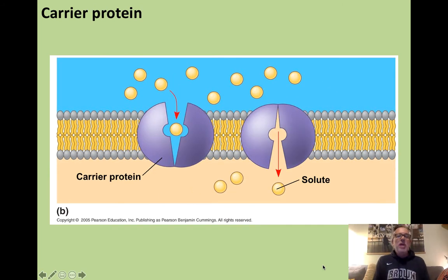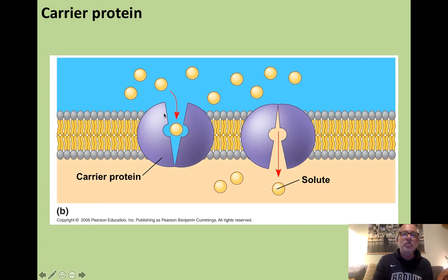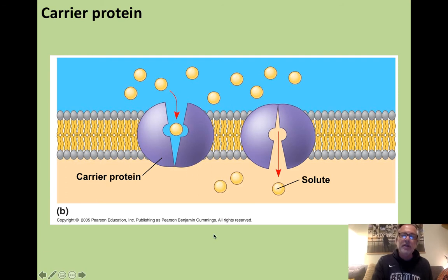Then we have carrier proteins, where the solute on the outside actually bonds temporarily to the protein. That causes the protein to change shape, and it kicks the solute out on the inside. Once the solute is gone, the protein reverts to its original shape, where it can bond to another molecule and bring it inside. Carrier proteins.